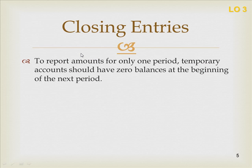To report amounts for only one period, temporary accounts should have zero balances at the beginning of the next period. So December 31st we close the temporary accounts; January 1st we start over with zero balances. However, the permanent accounts continue from December 31st to January 1st with the balance that they had — cash, accounts receivable, liabilities, supplies, et cetera.